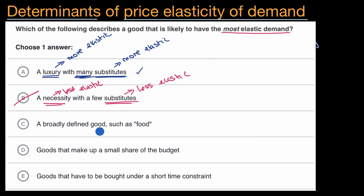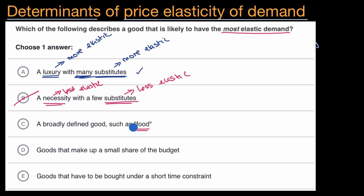A broadly defined good such as food — we need food, so if there's a price change in food, our quantity demanded would not likely change much. A percent change in quantity would not likely be that much. This would be fairly inelastic. Rule that one out.